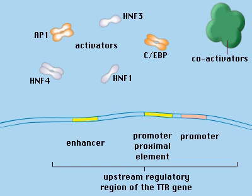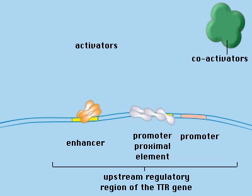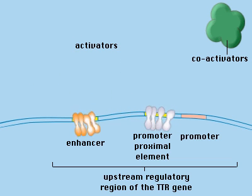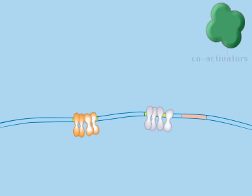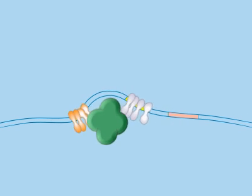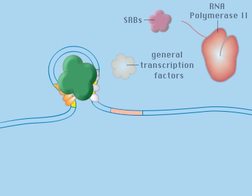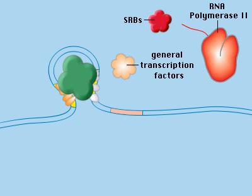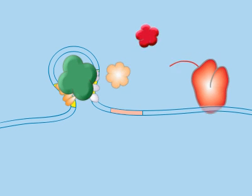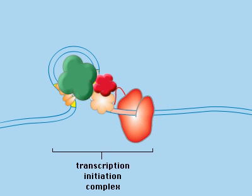Synthesis of an mRNA begins in the nucleus. There, transcription factors and coactivators bind to enhancer sequences. These factors are joined by general transcription factors, SRBs, and RNA polymerase II at the promoter to assemble a transcription initiation complex.